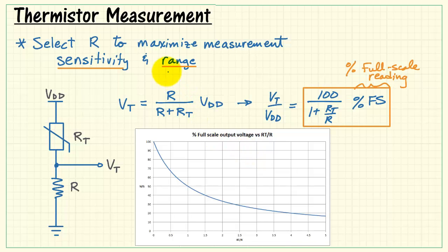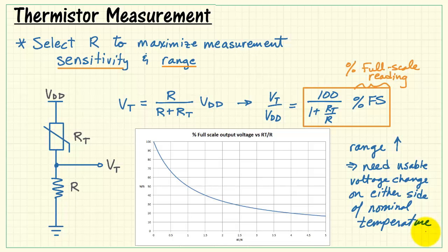In addition to maximizing sensitivity of the measurement we also want to maximize the available range of the measurement. And that means we'd like to have a usable voltage change on either side of our nominal temperature.